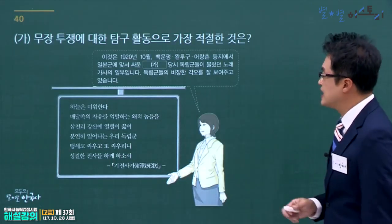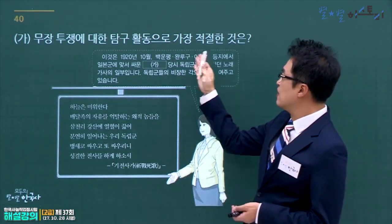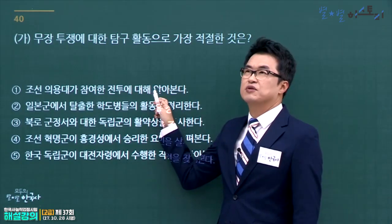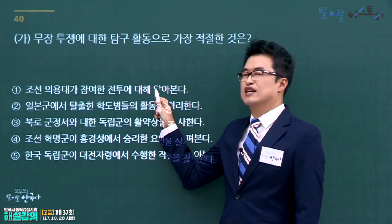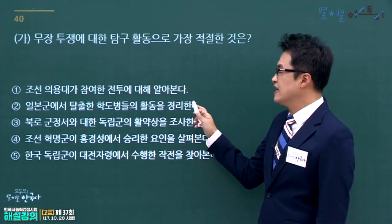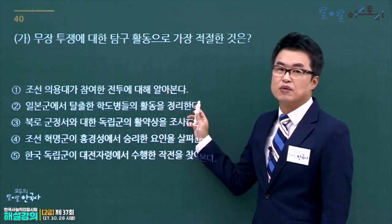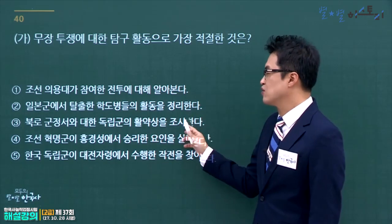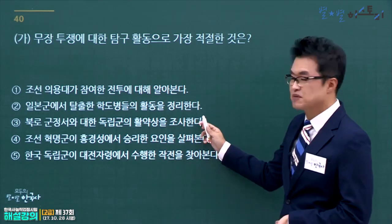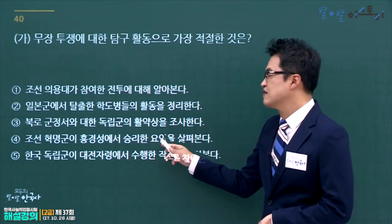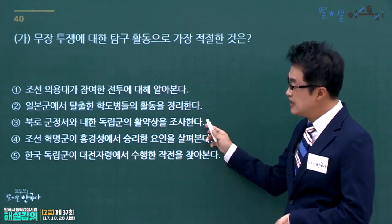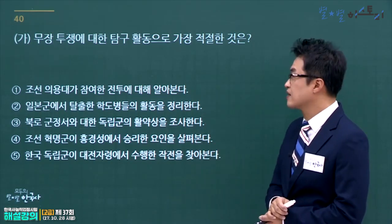백운평·어랑촌이 등장하는 무장투쟁은 청산리 전투입니다. 북로군정서와 대한독립군이 청산리 전투에서 활약한 연합부대입니다. 조선의용대는 중국 관내 활동, 한국광복군은 일본군 탈출 학도병과 연계되었습니다. 조선혁명군 흥경성 전투와 한국독립군 쌍성보·대전자령 전투는 1930년대입니다. 정답은 3번입니다.